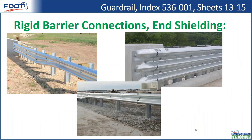Moving on to rigid barrier connections and end shielding. These drawings show crash test scenarios of approach transition connections to rigid barrier — the rigidity increases slowly as you approach the rigid barrier, avoiding an instantaneous change that would create pocketing or a snag hazard. These approach transition connections to rigid barriers need to be designed exactly as shown in the standard plans because they're crash-tested.